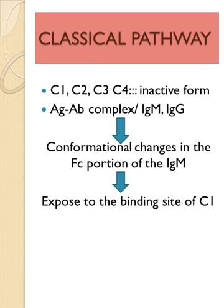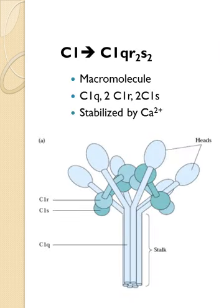These conformational changes expose the binding site of C1, the first complement component. C1 is a macromolecule — a combination of different proteins. Its sub-components are C1Q, C1R, and C1S. It has two molecules of R, two molecules of S, and one molecule of Q. This whole structure is stabilized by calcium. That is the entire structure of C1.